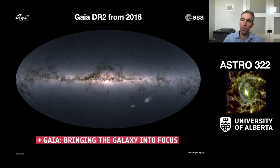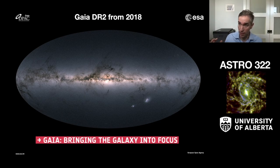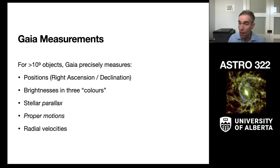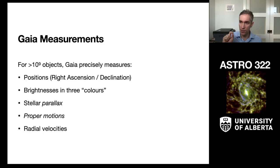Gaia is targeted at understanding the stars and stellar populations in our galaxy. Since these form the backbone of our galaxy — the dominant constituent of baryonic or regular matter in our galaxy is the stars — this tells us a ton about galaxies. What Gaia is doing is a relatively simple, targeted mission: it is just telling us everything we can about one billion stars.